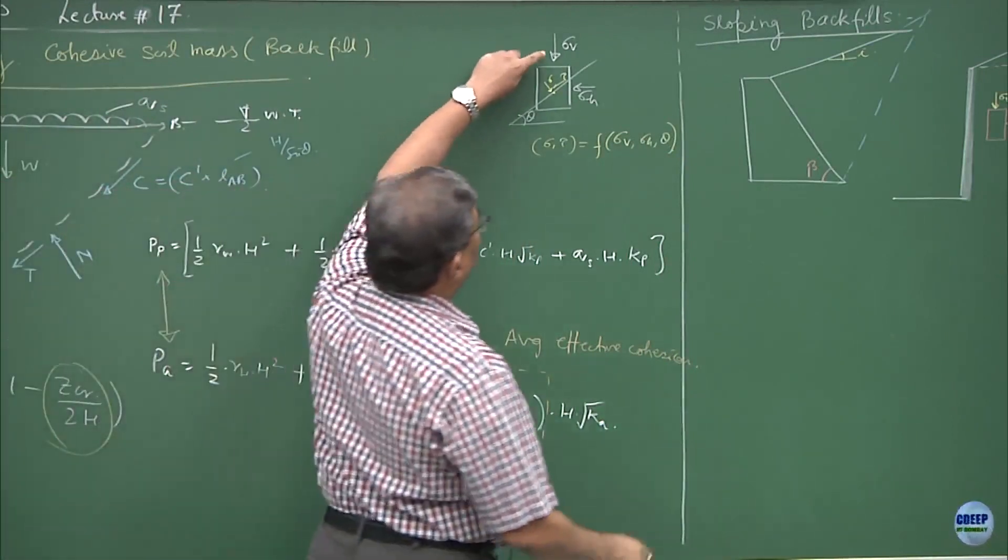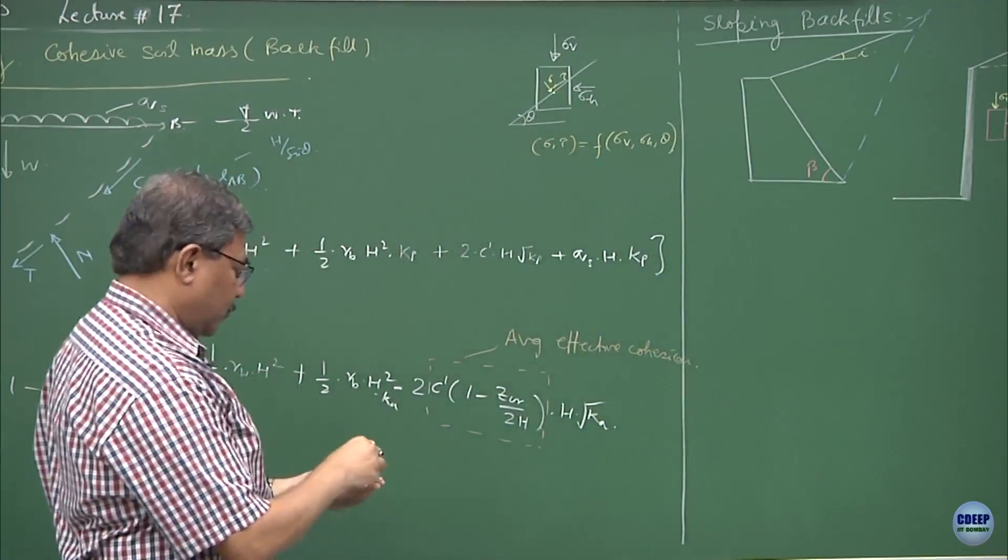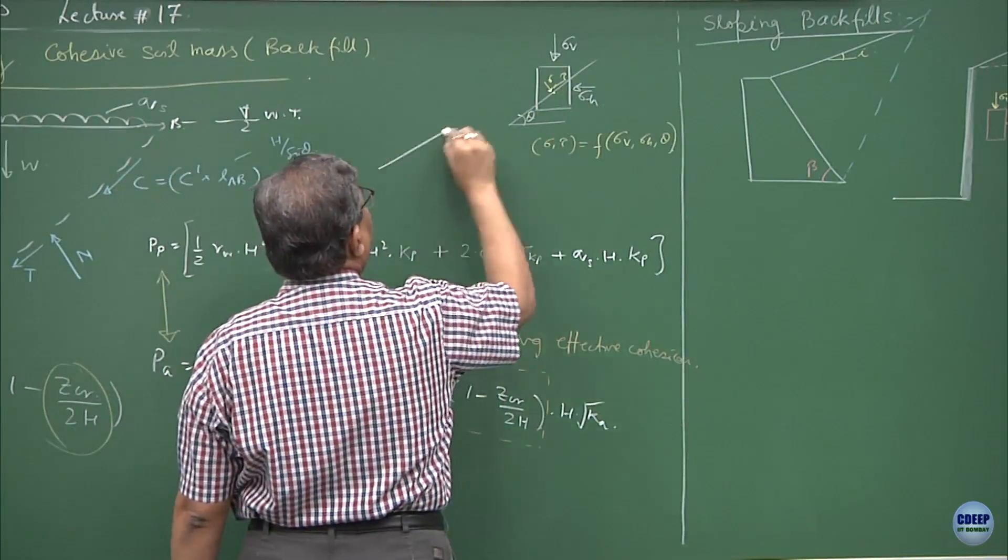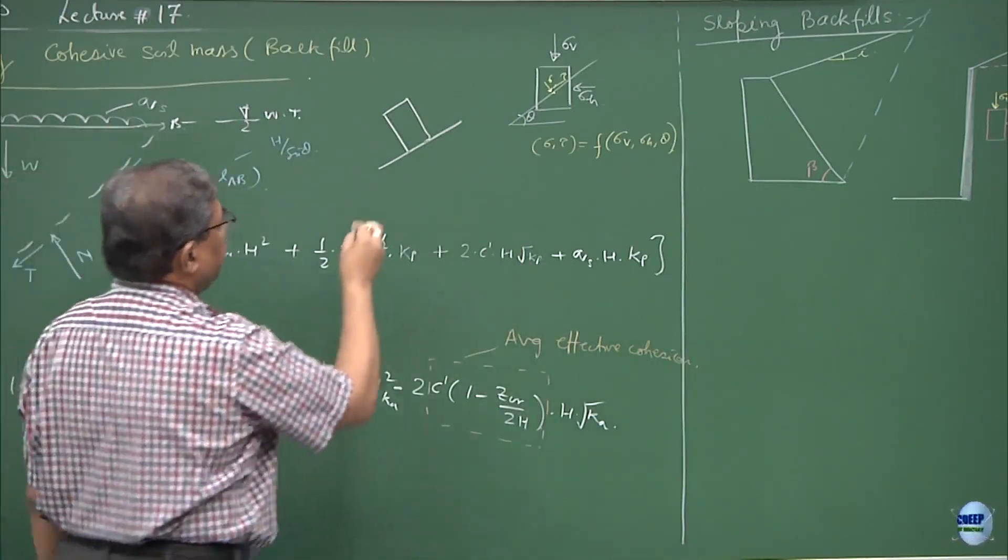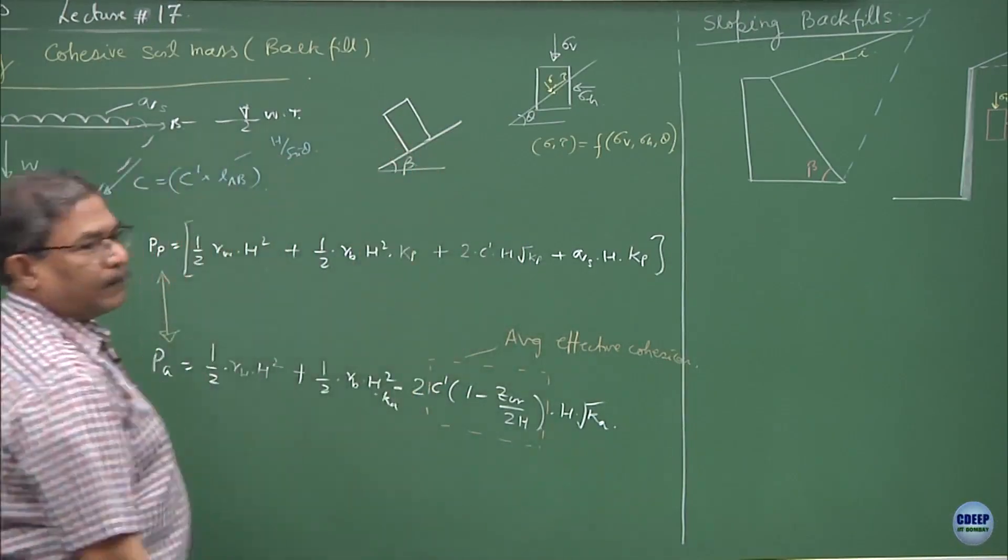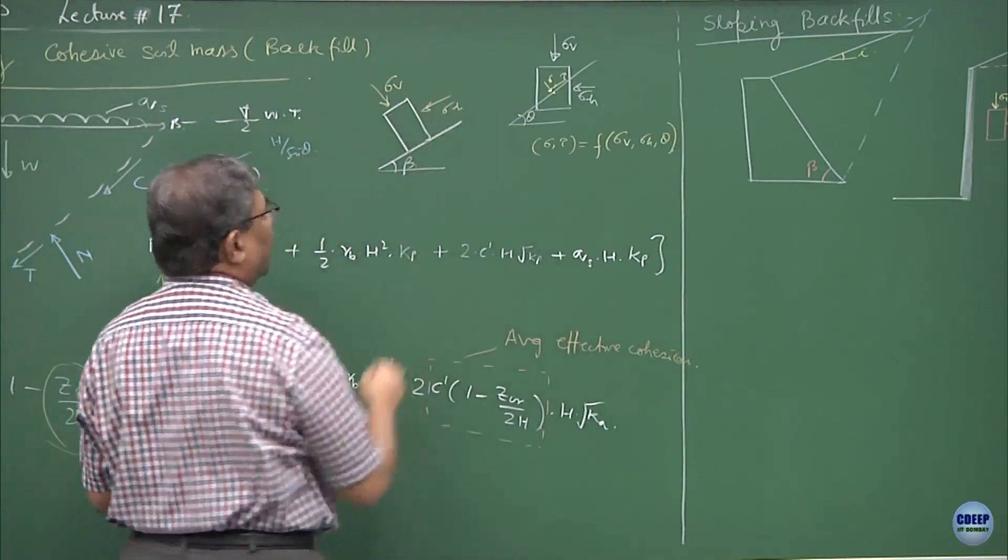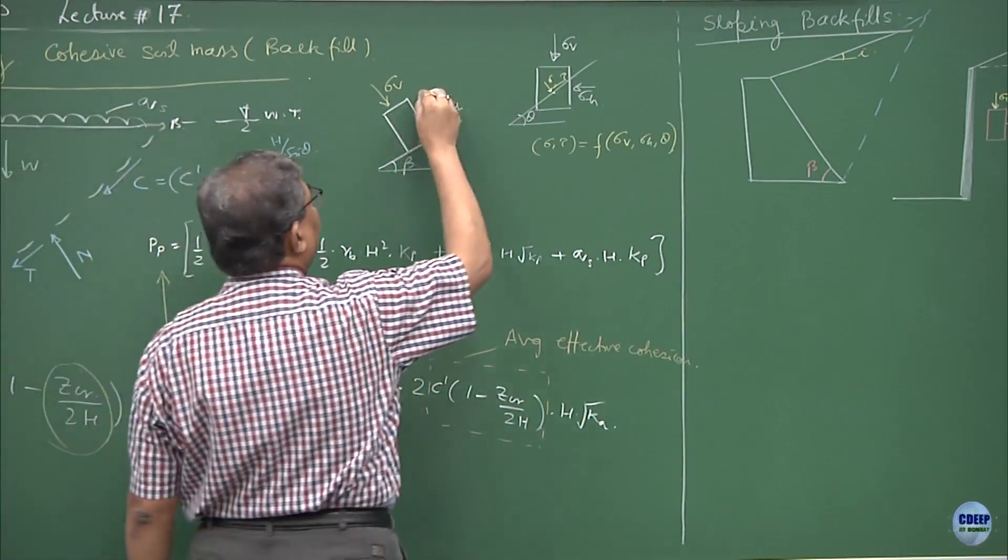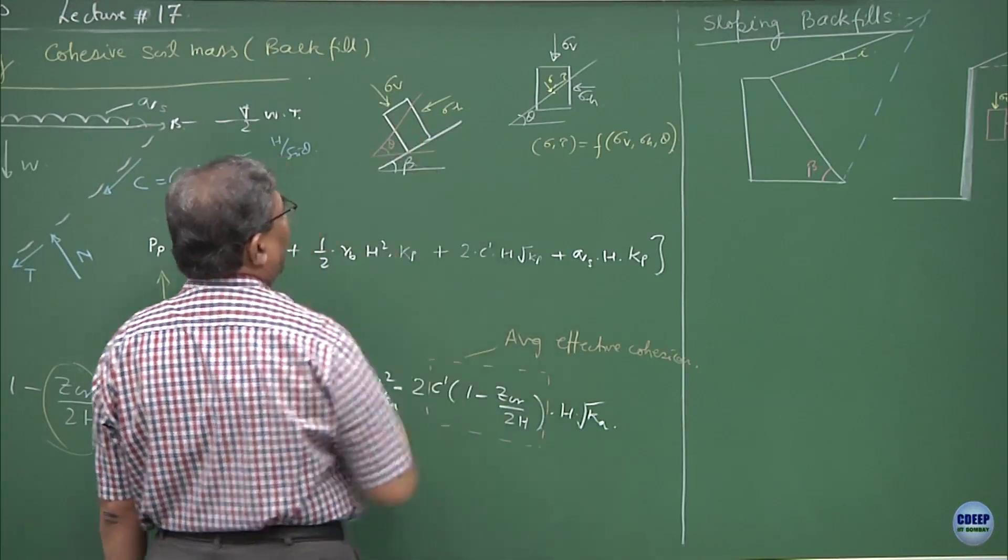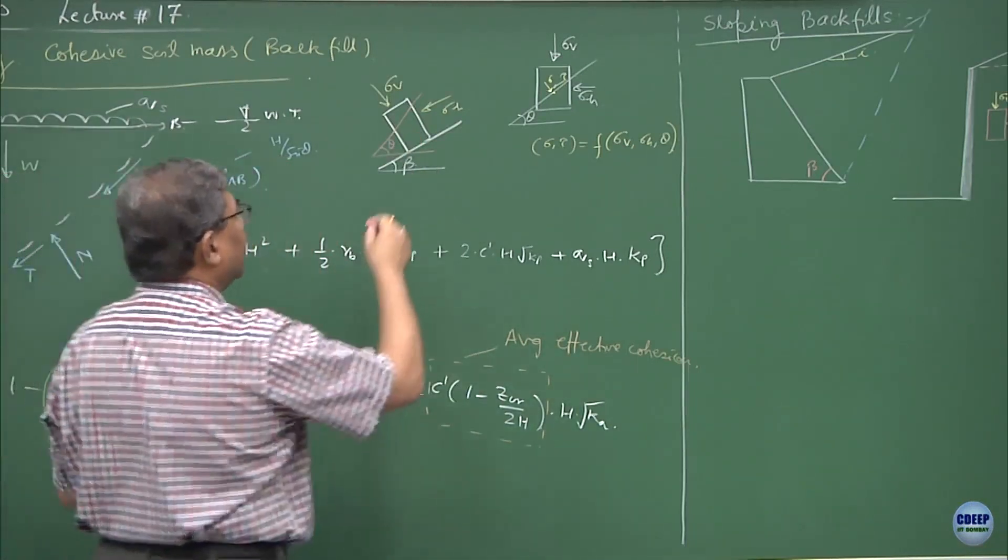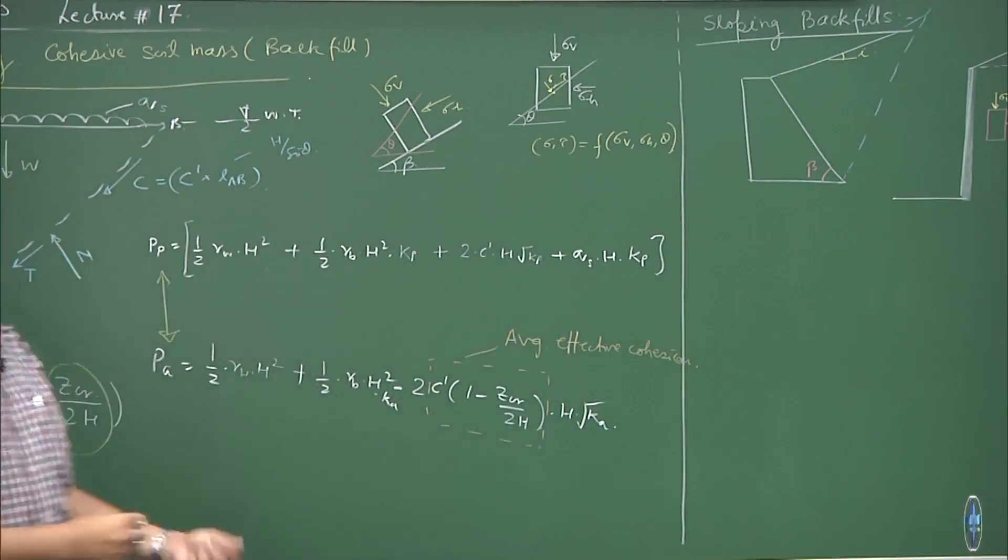And we did a reverse problem also. What we did is, we created a situation where the element itself was inclined at an angle of theta. If this is the element of the soil which is sitting at an angle of beta and then being acted upon by sigma_v, sigma_h and then you are supposed to find out the state of stress which is parallel to the surface, inclination beta.